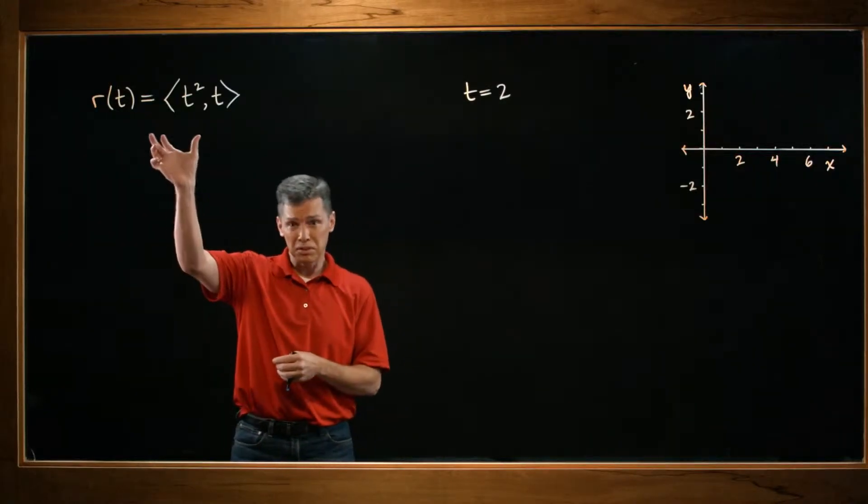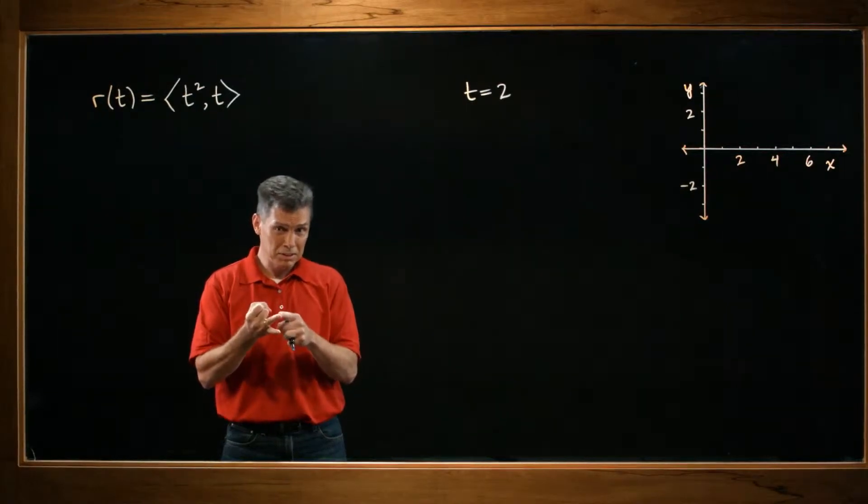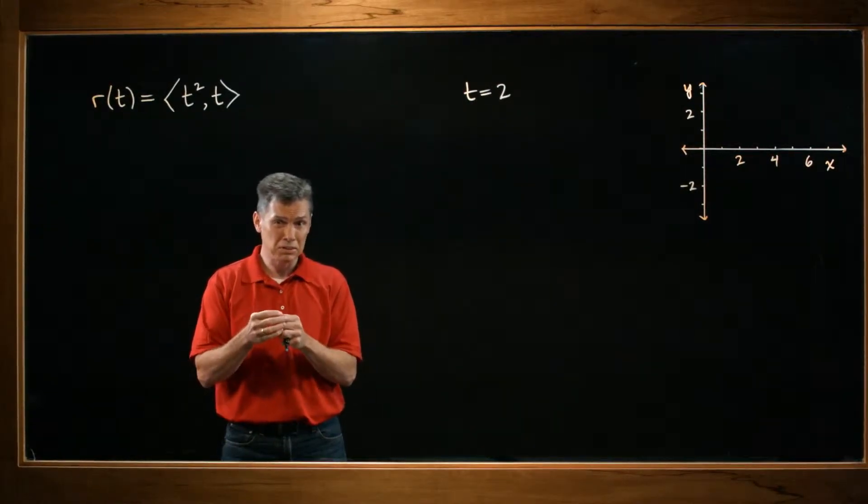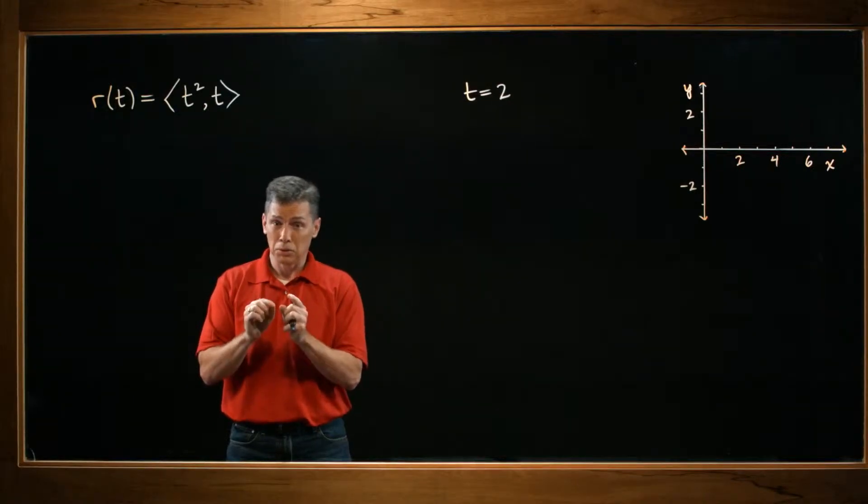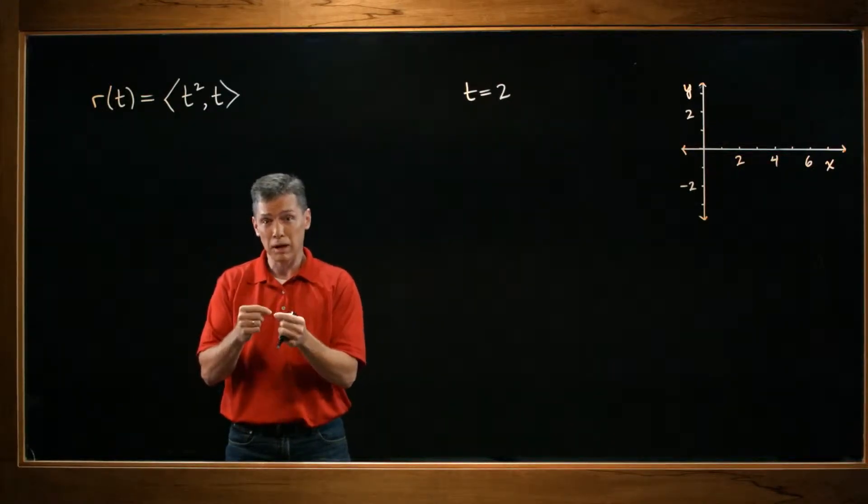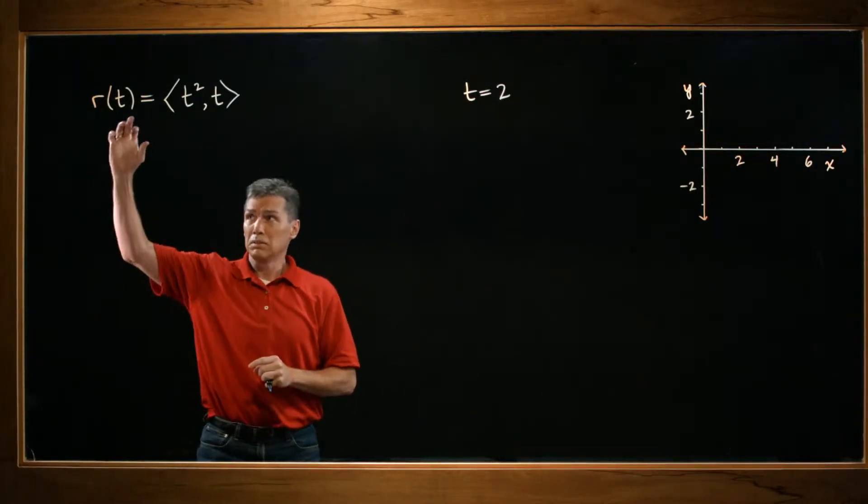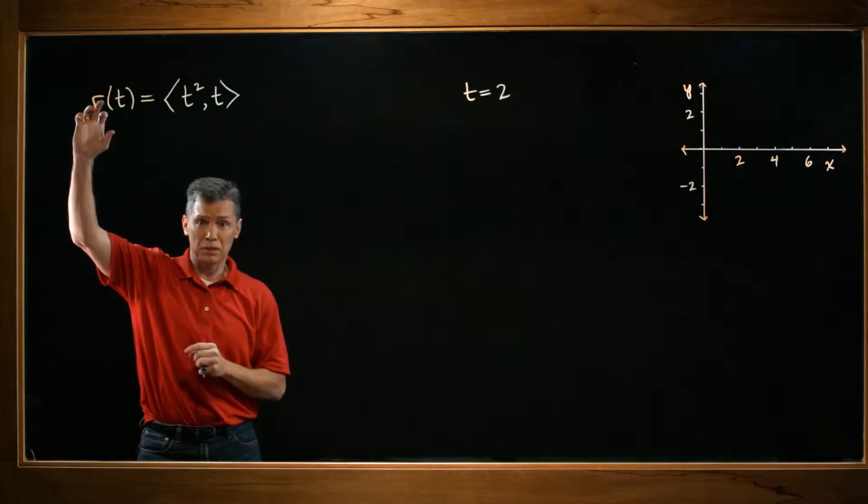If they give us a position vector, they want us to find the velocity vector and the acceleration vector. And while we're at it, they also ask us to find the speed. All right, so in terms of the mathematics here, what you really have to know is how those different quantities relate to each other. For instance,